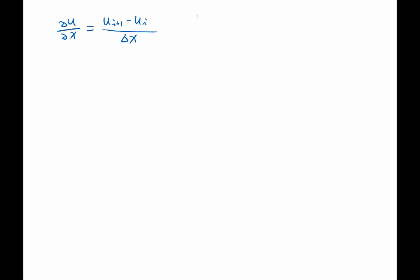Now, if you look at the approximation error, we have minus Ui over delta x plus Ui plus 1 over delta x. And we subtract this numerical approximation from the analytical derivative.